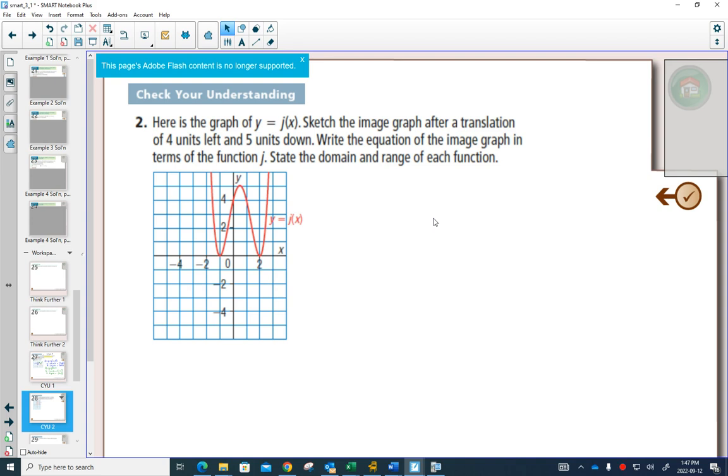So again, sketch the graph after a translation of four units to the left and five units down. So if we're doing a bunch of points, these seem to be like key points. If I take that point and I go four to the left and five down, that would end up there. Oh, I didn't go four. Can't count. One, two, three, four, and five down. I can find out where those three points would be after going four to the left and five down, and then I just try to draw the graph in the same shape.